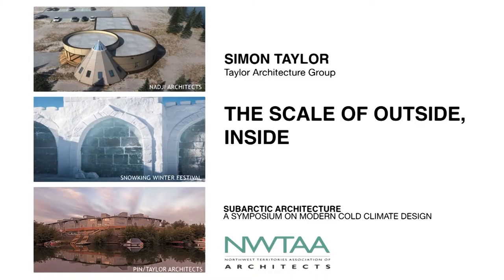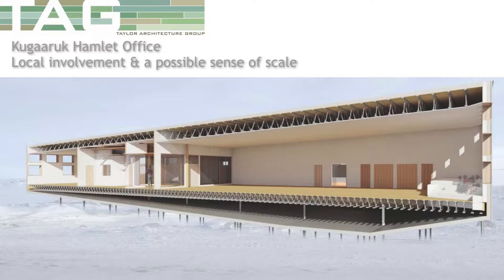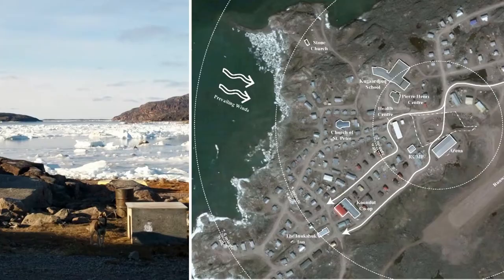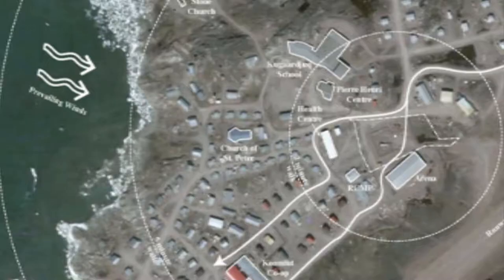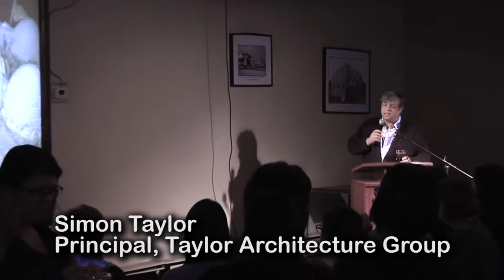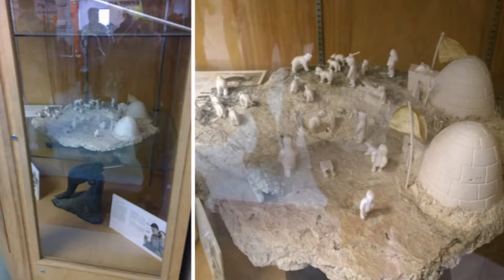I'm not doing the inside-outside scale — I started with that and got more interested in this. We did a project recently, actually not yet finished, where we ended up using a lot of local labor to sort out the economic issue. It's in Kugurek, a very remote community, only accessible by air or by sea lift — the Coast Guard doesn't even make it into this community. We took on a project with a $9 million budget.